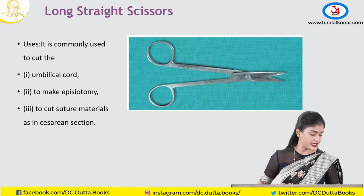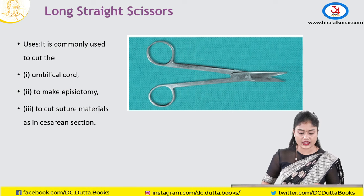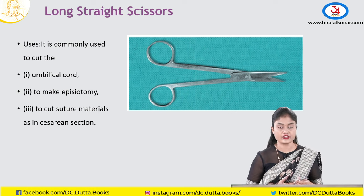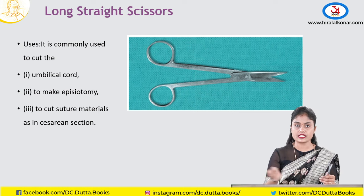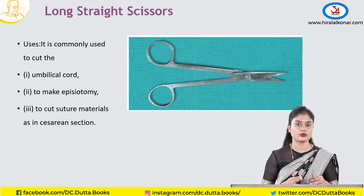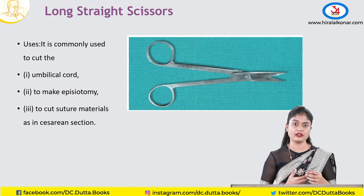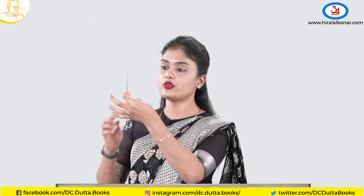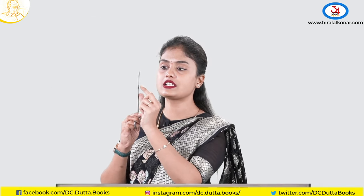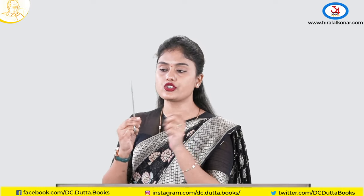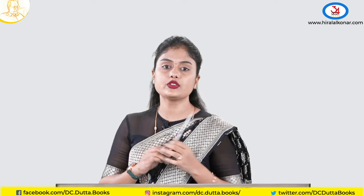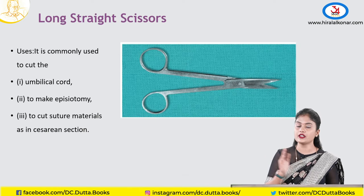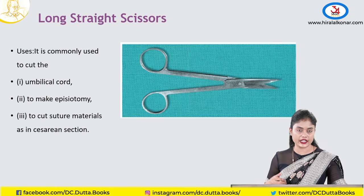Coming to the long straight scissors — also called Mayo scissors. This is used to cut tissues like the umbilical cord or any tissue. If episiotomy scissors are not available, this can be used. Curved scissors are used for skin or tissue cutting, whereas straight scissors are used for cutting suture materials.